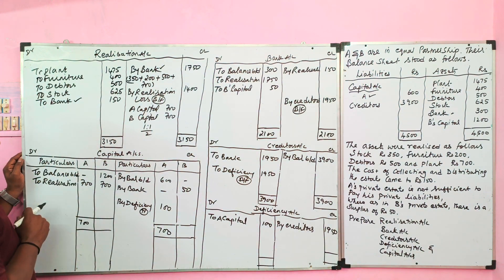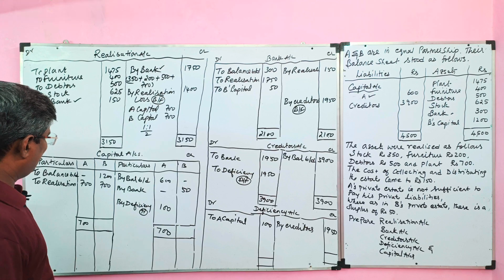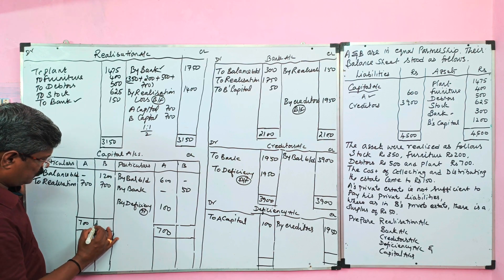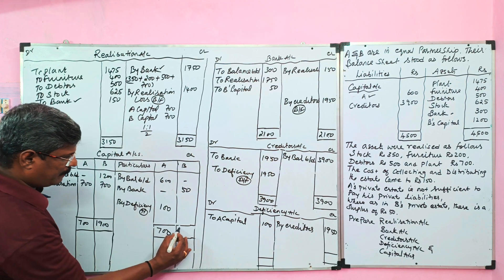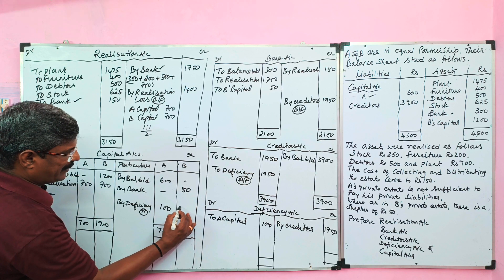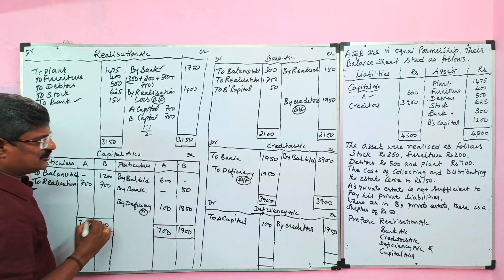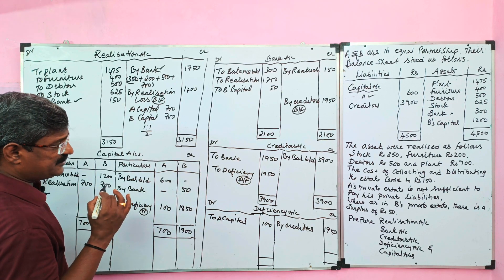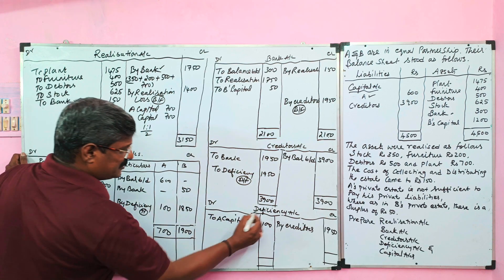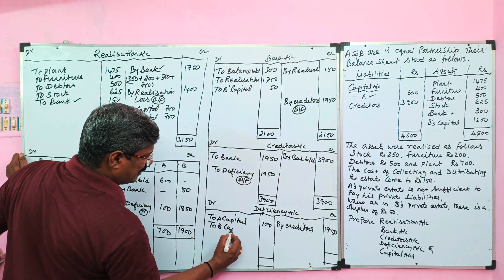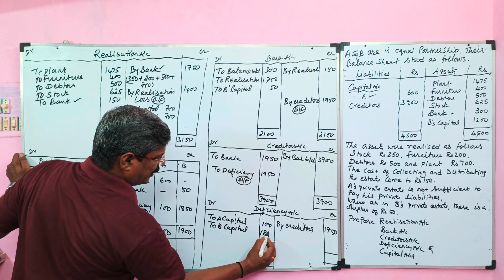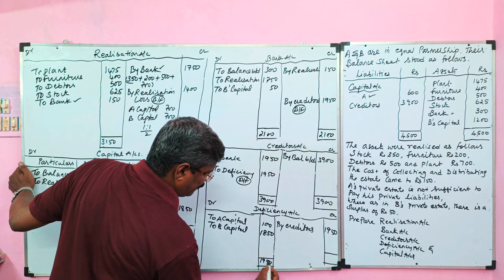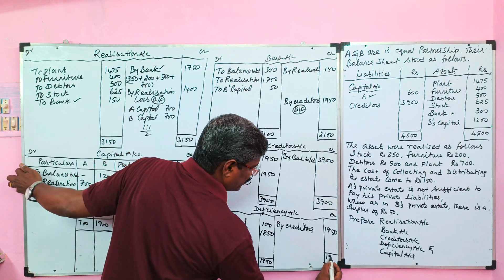Now we close B's capital. Debit side total ₹1,900; credit side ₹50. The balancing figure ₹1,850 is transferred to the deficiency account. Entry: deficiency account debited to B's capital. In the deficiency account, debit side: 'to A's capital' ₹100 and 'to B's capital' ₹1,850, total ₹1,950. Credit side: 'by creditor' ₹1,950. Both sides agree at ₹1,950.